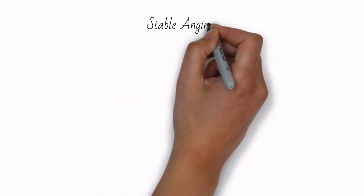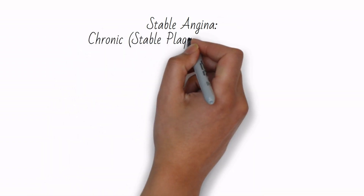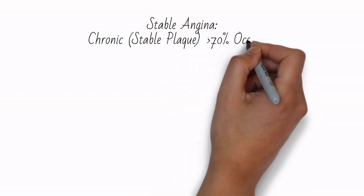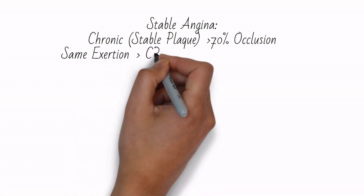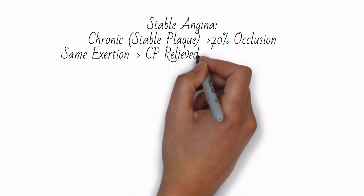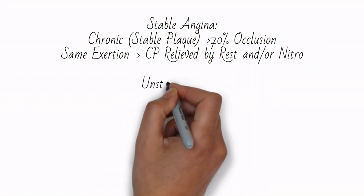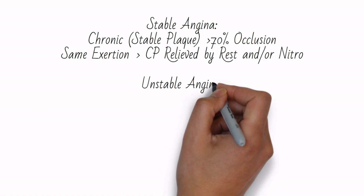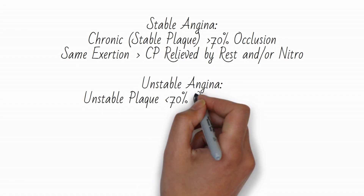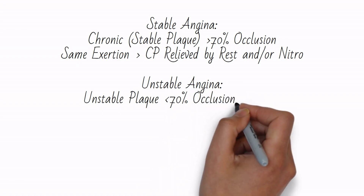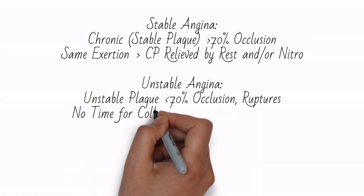Chronic occlusion of greater than 70% usually results in stable angina, a condition where chest pain results from essentially the same amount of exertion and is relieved by rest or nitroglycerin. Unstable plaques rupture leading to occlusion by thrombus. The smaller the initial plaque, the less compensation by collateral circulation develops over time. Thus, a chronic 10% stenosis due to plaque is more dangerous if it ruptures than a chronic 80% occlusion, because there will be significant development of collateral flow with the 80% occlusion.